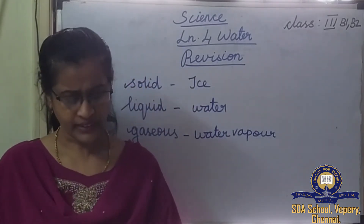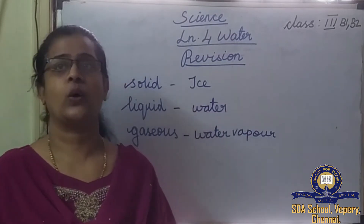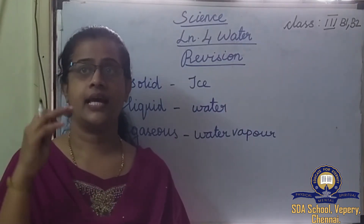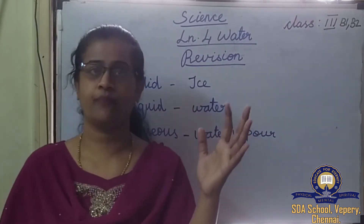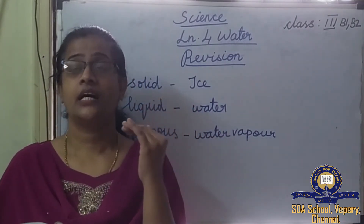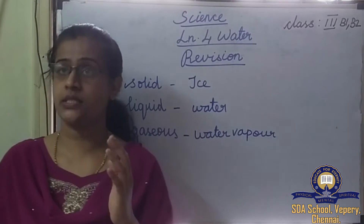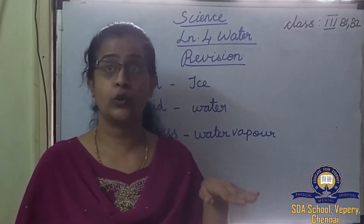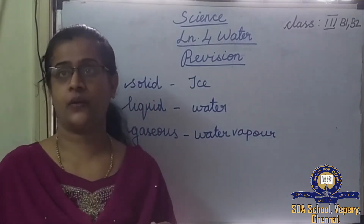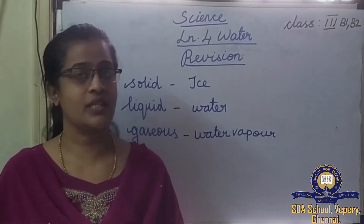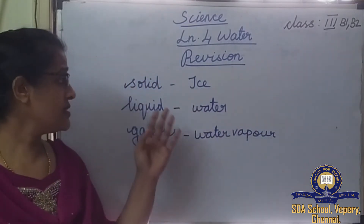Water vapor is colorless — we cannot see it. The heat of the sun is constantly changing the waters of rivers, lakes, and oceans into water vapor. You can see this on page number 18. We cannot see water vapor because it is colorless. The three forms of water are solid, liquid, and gas.